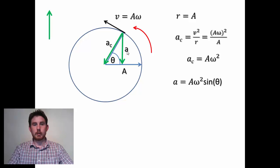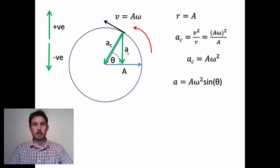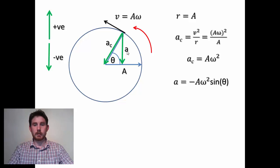At this point it's worth noting that in this reference system upwards is positive and downwards is negative. The linear acceleration vector is pointing downwards, so our actual value for acceleration should be negative. We modify our equation by putting a negative sign in front of it, giving us a downwards acceleration assuming that upwards is positive.